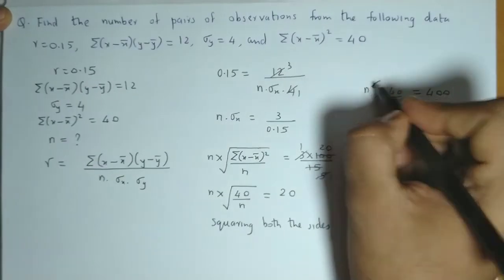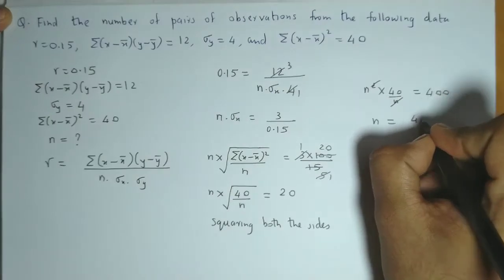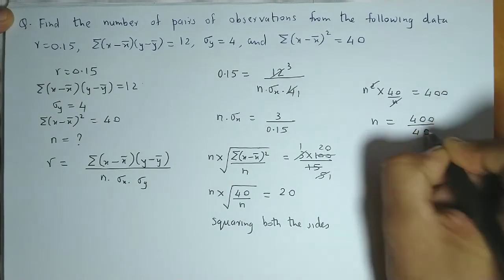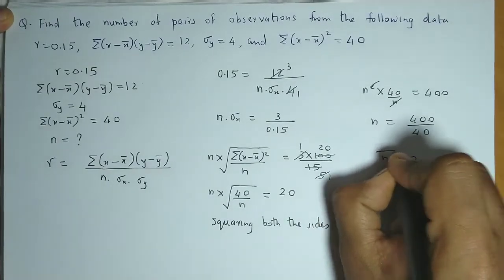Now one of the n gets cancelled. So we have n equals 400 divided by 40. So the value for n is equal to 10.